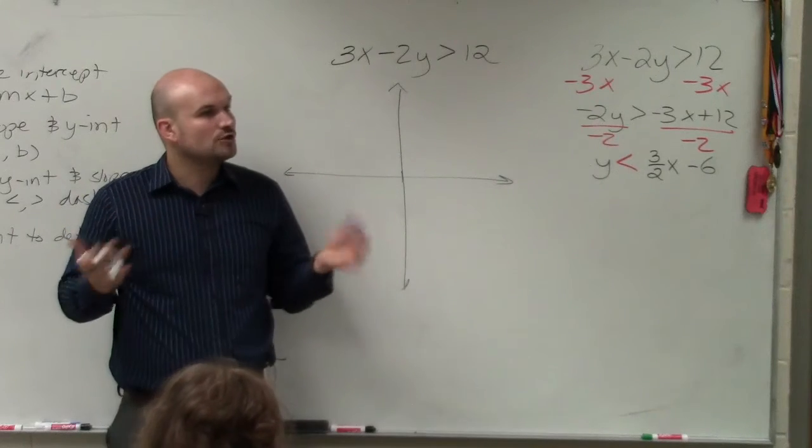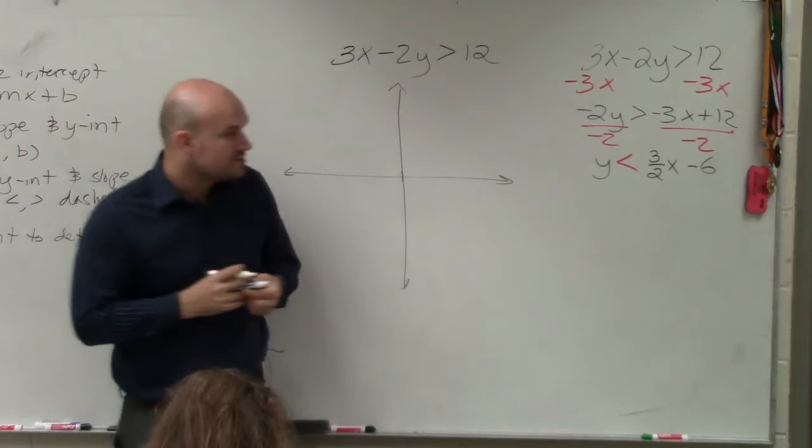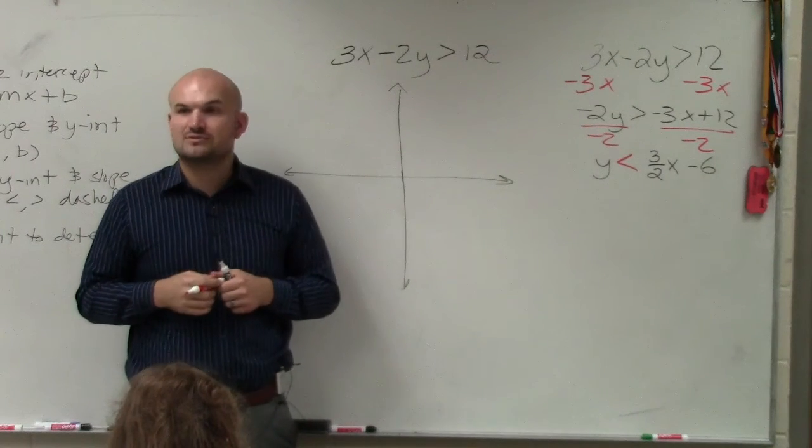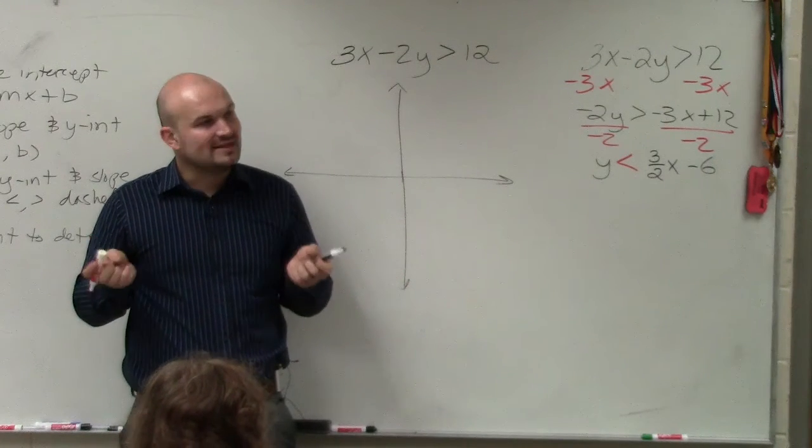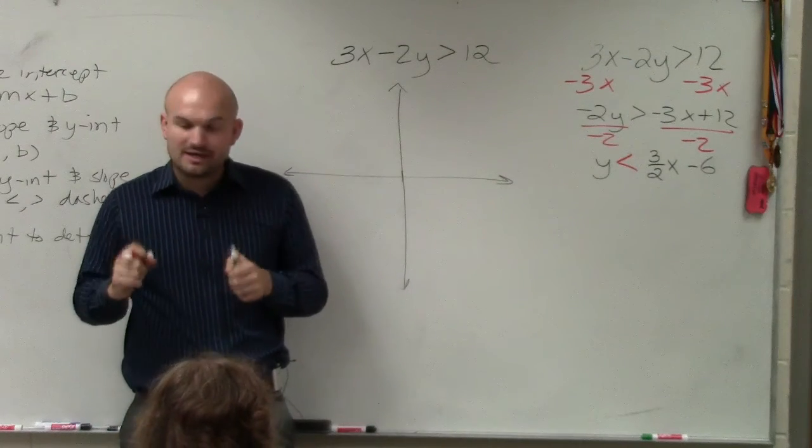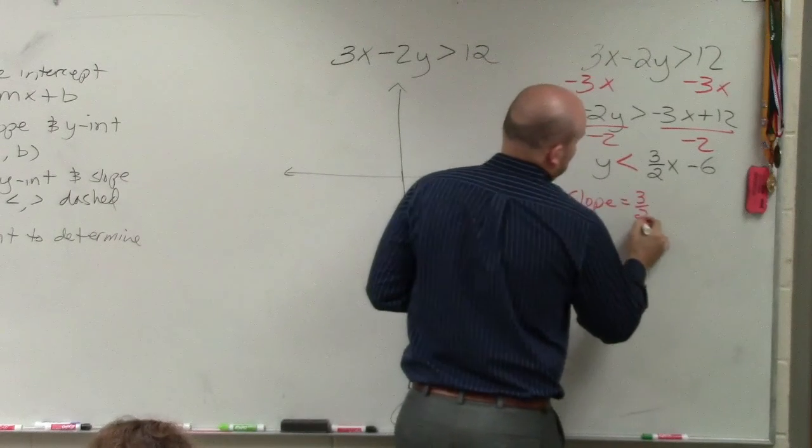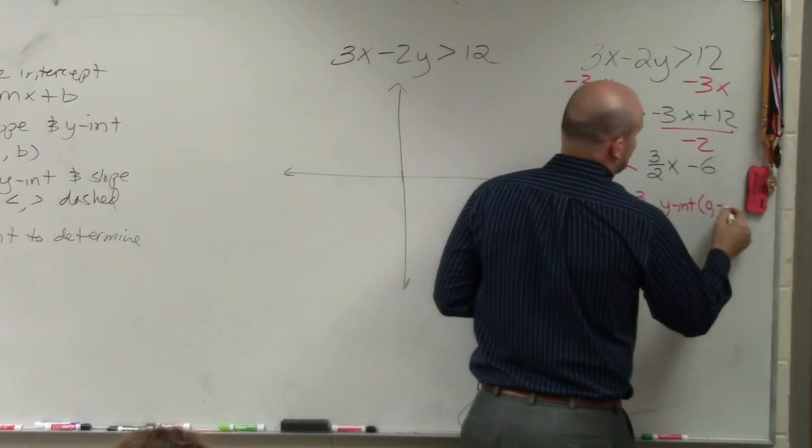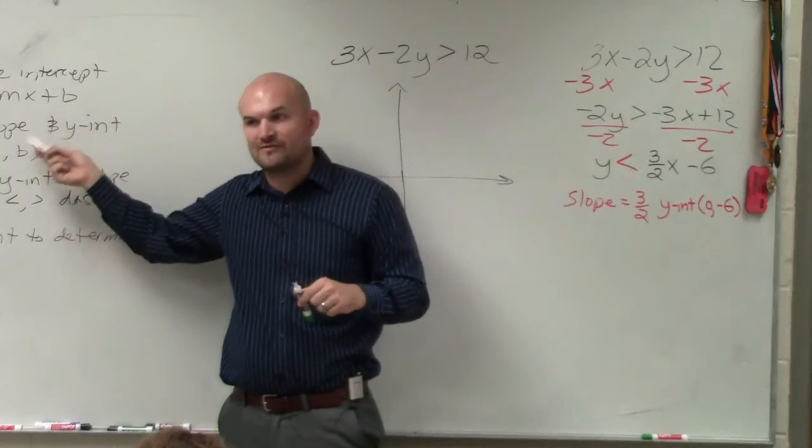You guys see how this is now in slope-intercept form? It's not equals, but it's in slope-intercept form. So now we can identify the slope and the y-intercept. I do not like saying m equals 3 halves, b equals negative 6. Yes, that is correct, but how does that really help you? Write the slope as a fraction and write the y-intercept as a point. So I will say the slope is 3 halves, and the y-intercept is the coordinate point 0 comma negative 6. The y-intercept is always 0 comma whatever b is.